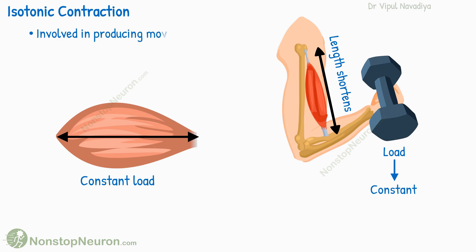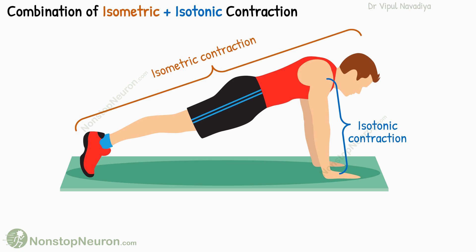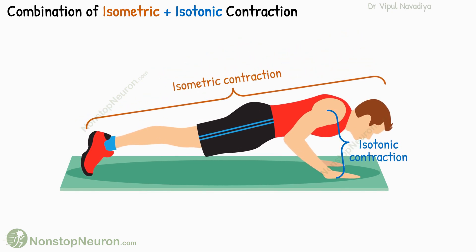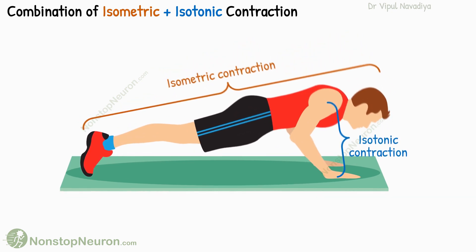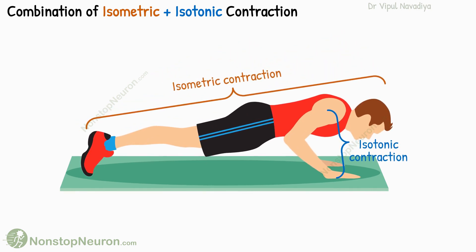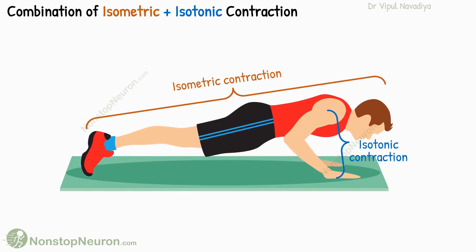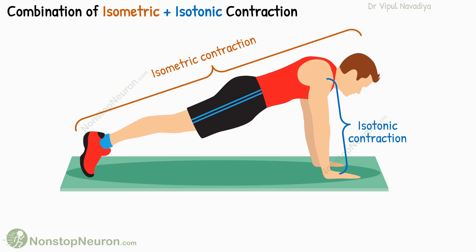This type of contraction is involved in producing actual movements. Many physical activities involve various combinations of isometric and isotonic contractions. Let's take push-ups as an example. During a push-up, the muscles of the torso and lower limbs contract isometrically as they hold that portion of your body in a fixed position. At the same time, the muscles in your arms and shoulders undergo isotonic contractions as you move to perform a push-up.